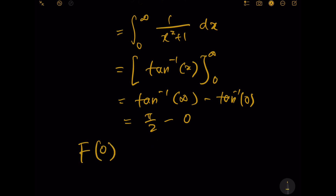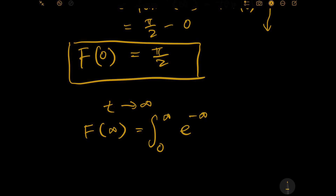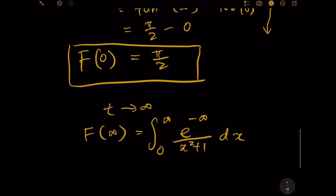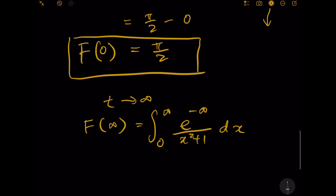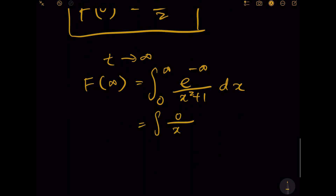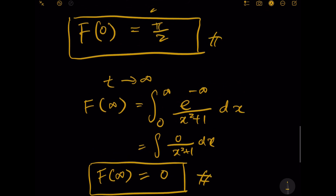So F(0) equals π/2. Now let's find what happens when t goes to infinity. F(∞) equals the integration from zero to infinity of e to the power of negative infinity times x squared plus 1, dx. Since the Gaussian function goes to zero as the exponent goes to negative infinity, the integrand becomes 0 over x squared plus 1, so F(∞) equals zero.